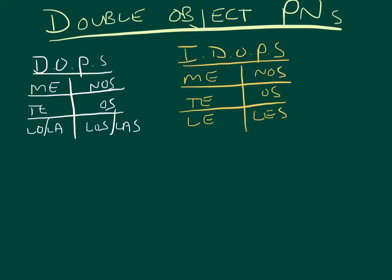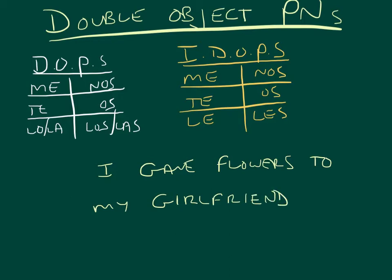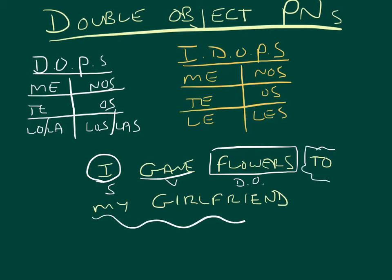Okay, now. Say you wanted to use them both. And in a sentence, like, I gave flowers to my girlfriend. And I want to say, I gave them to her. I want to simplify it even further. Let's diagram the sentence. Subject. Verb. Direct object. And, put it over here. Indirect object.